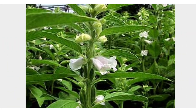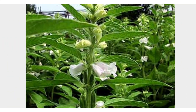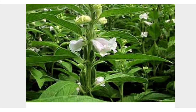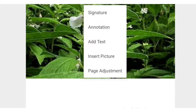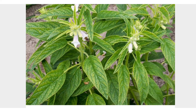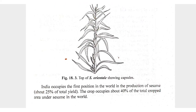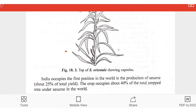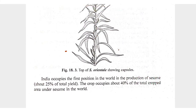You can see pictures of the sesame plant. The flowers are produced, and below the flower a capsule is present, inside which the seeds form. India occupies the first position in the world in the production of sesame, with about 25 percent of the total yield, and the crop occupies about 40 percent of the total crop area under sesame in the world.